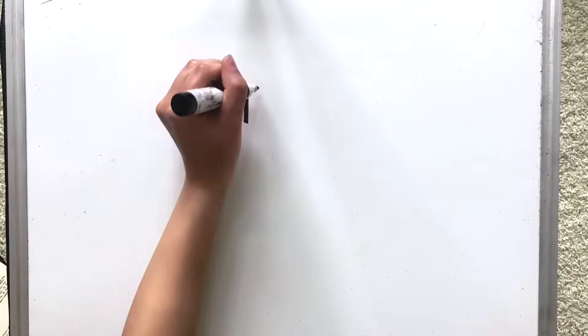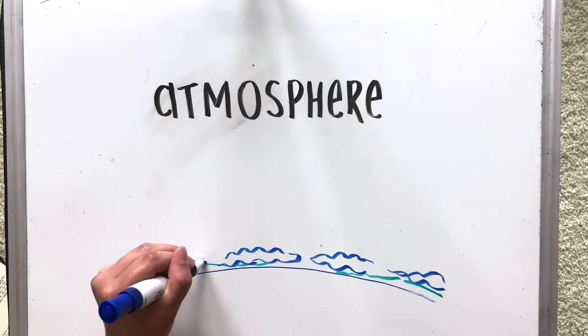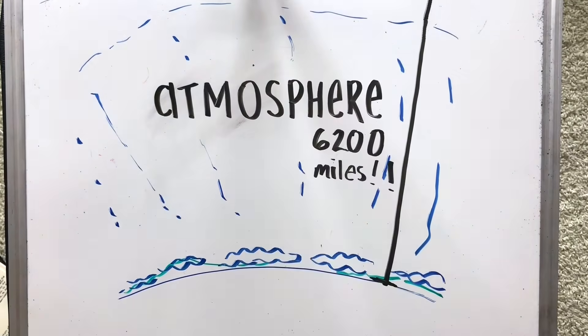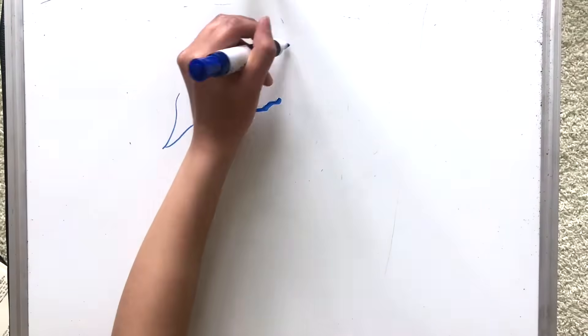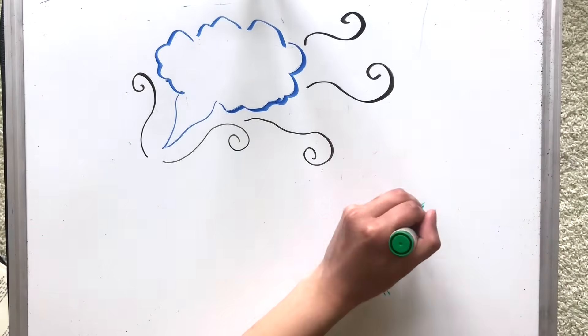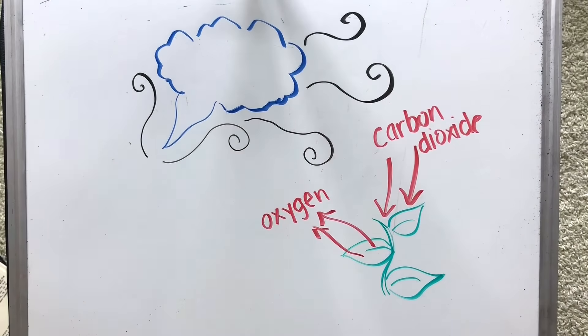Our last main system is our atmosphere, which contains all the air on Earth. It extends up about 6,200 miles, surrounding our entire planet. Our atmosphere is amazing in the way that it keeps us warm, contains all the oxygen we need to breathe, and contains all the carbon dioxide plants need.